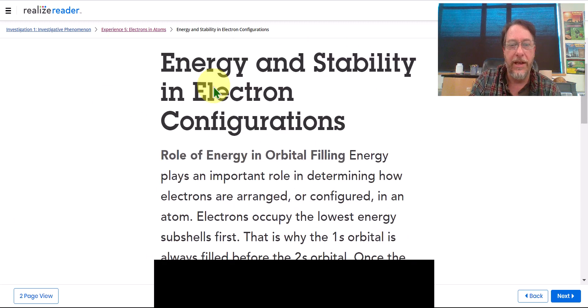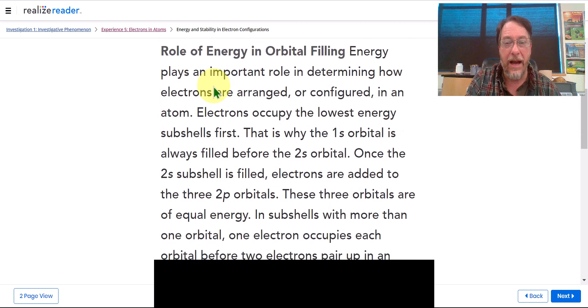We're looking at doing electron configurations. We started that in the previous Section 4 lesson, and now I'm going to talk a little bit more about actually filling in electrons and using the d-orbitals and things like that. Right now we're really just talking about how we fill in electrons, and energy is a big part of it.